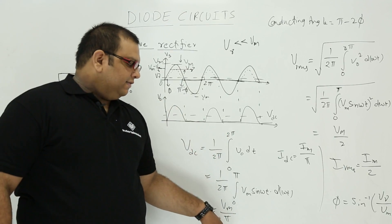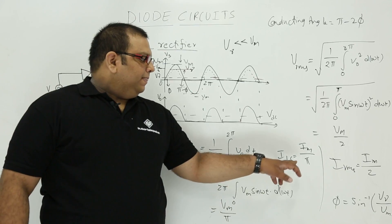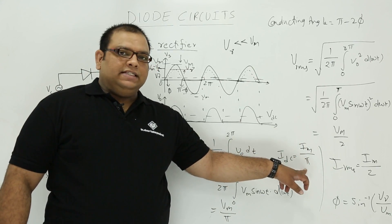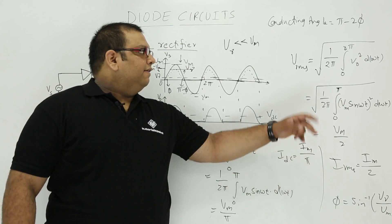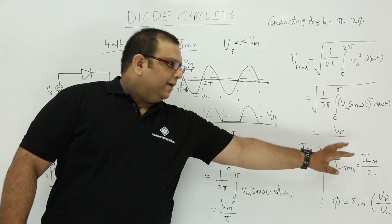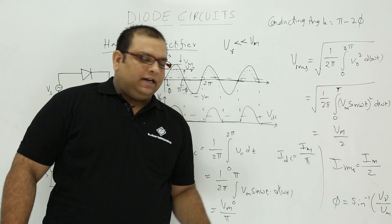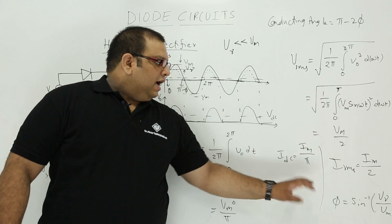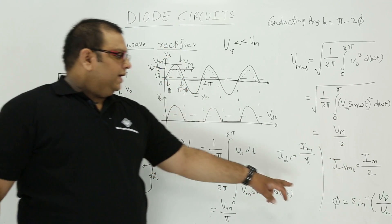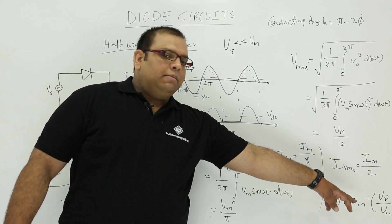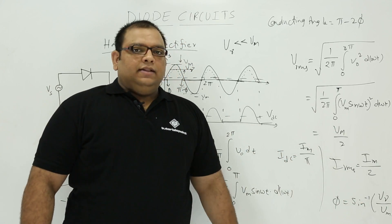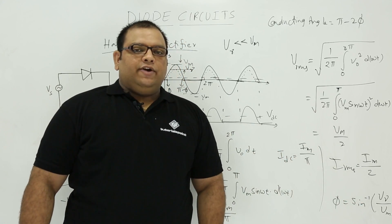To summarize the half wave rectifier: for DC values, Vdc = Vm/π and Idc = Im/π. For RMS values, Vrms = Vm/2 and Irms = Im/2. The cut-in voltage formula gives the ignition angle as φ = sin⁻¹(V-gamma / Vm).